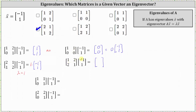Next, the first entry is 1 times negative 1 plus 2 times 1, which is 1. And the second entry is 2 times negative 1 plus 1 times 1, which is negative 1. The vector (1, -1) is a scalar multiple of the vector (-1, 1) because (1, -1) equals negative 1 times (-1, 1), which means lambda equals negative 1 is an eigenvalue for the given matrix. The vector (-1, 1) is an eigenvector corresponding to lambda equals negative 1, and therefore we do select the matrix [1, 2; 2, 1] from above.